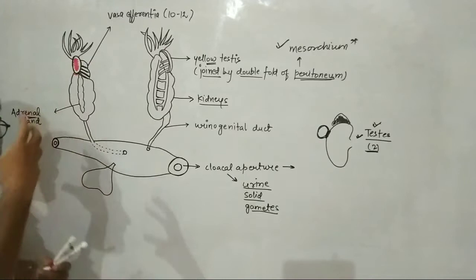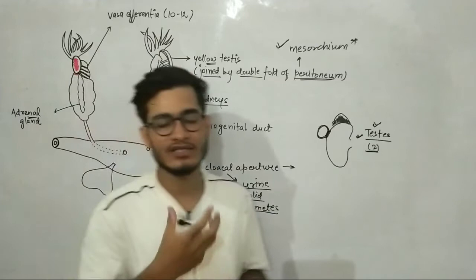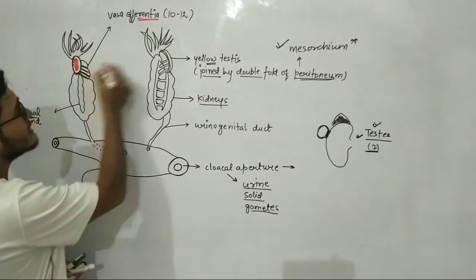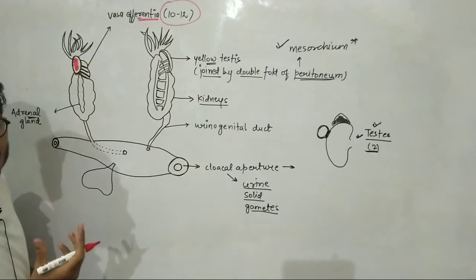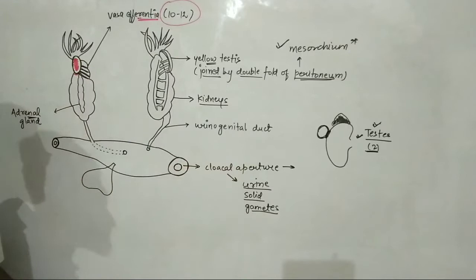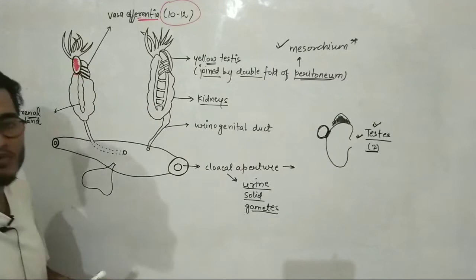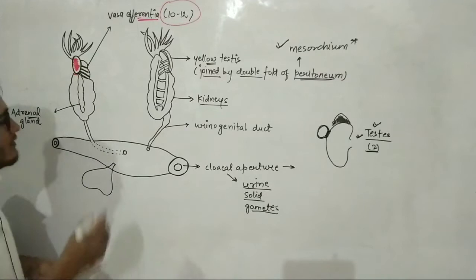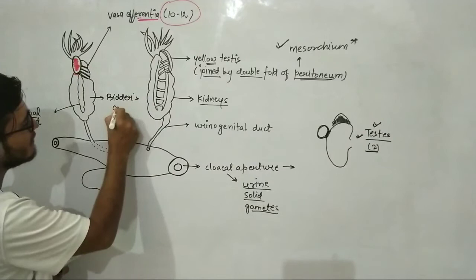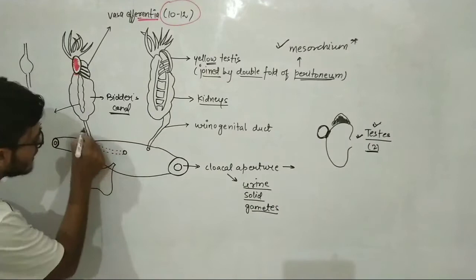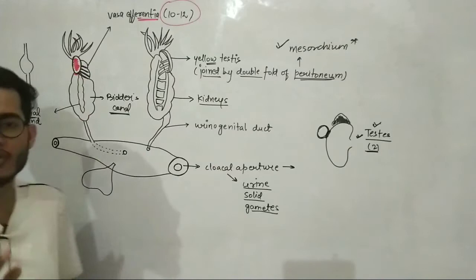In case of humans also, from testis you have many ducts coming out like vas deferens, vas efferentia, epididymis, rete testis. Here you only have vas efferentia, so 10 to 12 vas efferentia will be coming out from the testis. After that they will open into the urinogenital duct. So the sperm is formed here in the testis, it will come into vas efferentia which is a duct connected to the testis. Vas efferentia is going to open into the urinogenital tract via the Bidder's canal. This is the second most important point. Bidder's canal - vas efferentia will first open into Bidder's canal, after that it will go into urinogenital tract. So before entering this tract, in between you have Bidder's canal present, which is not shown in NCERT because it becomes very complex.